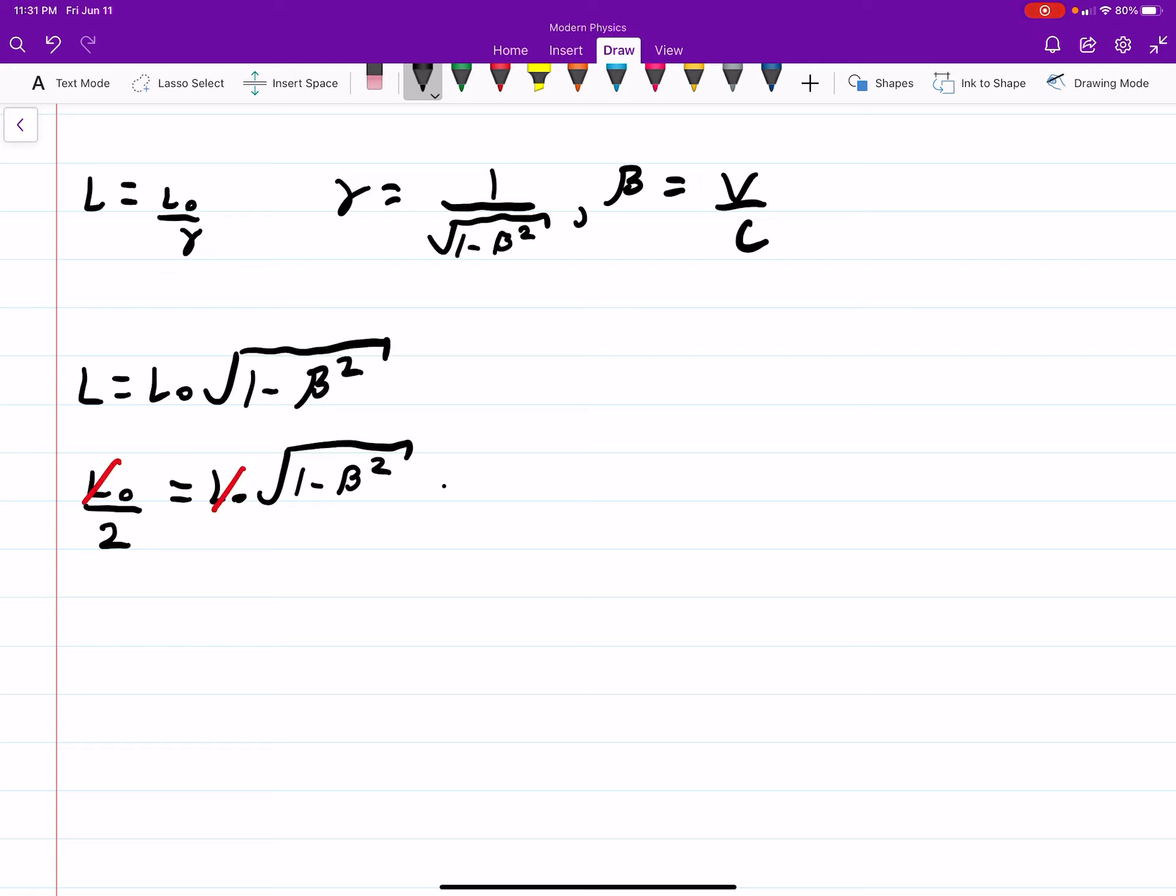and if you square both sides, you will get one-fourth equals 1 minus beta squared. Beta squared is equal to 1 minus one-fourth, which is just three-fourths.